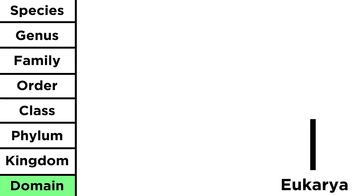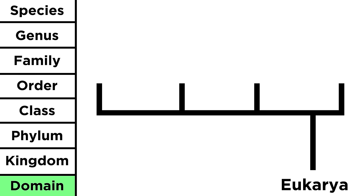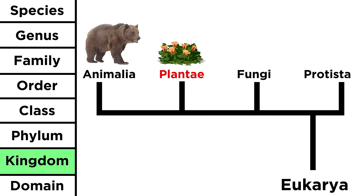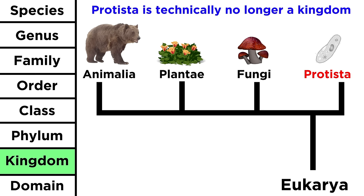Within the domain eukarya, there are several kingdoms. Animalia contains all animals, plantae contains all plants, fungi contains all mushrooms and molds, and protista contains all the rest, although many biologists don't recognize this as a valid kingdom any longer.